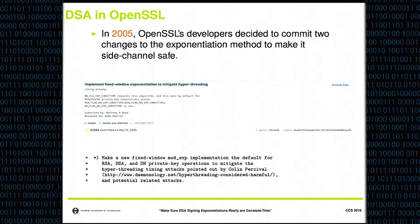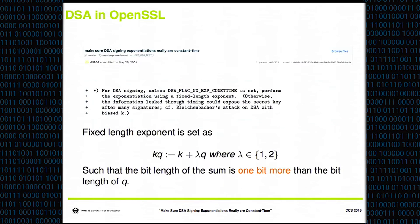How it's implemented in OpenSSL: in 2005, OpenSSL developers committed two changes to the base code to improve the exponentiation method. One was implementing a fixed window exponentiation method instead of the sliding window, thanks to the work by Colin Percival. The other was to make sure the DSA signing exponentiation is really constant-time. In this change, they set the bit length of KQ as one bit more than the bit length of Q to give it a fixed length and prevent certain attacks. They compute KQ as K plus once or twice the size of Q.